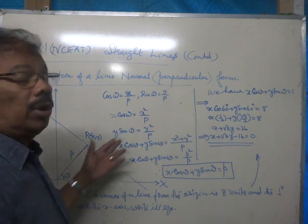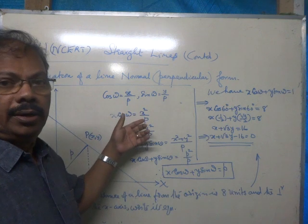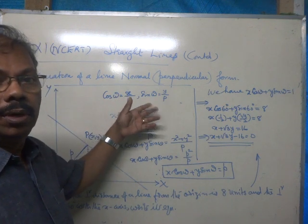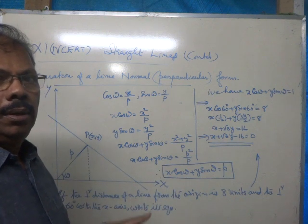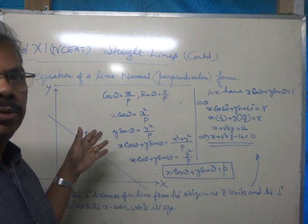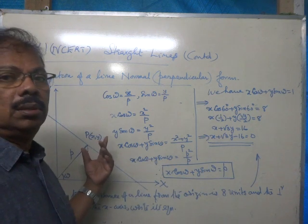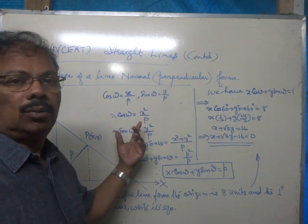There is one more type of equation of a line, known as normal form or perpendicular form. You will be given a straight line at a particular distance, say p units from the origin,